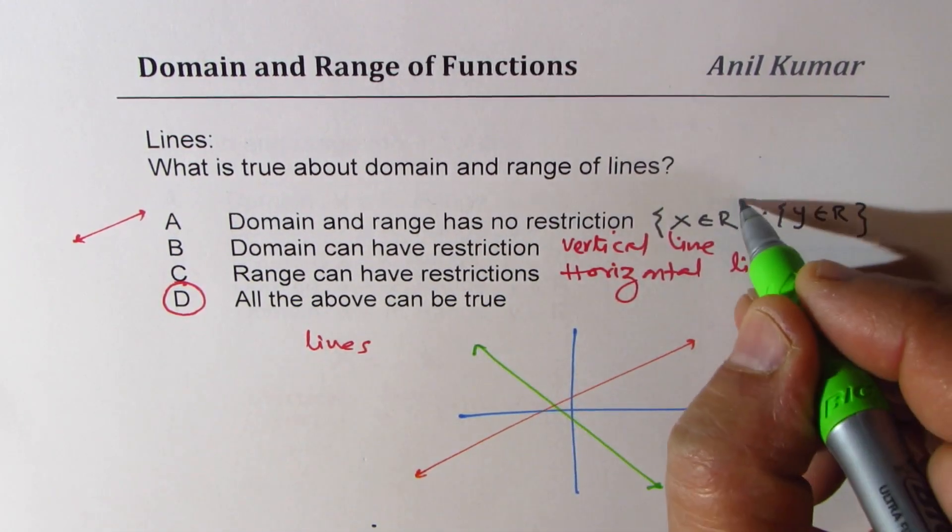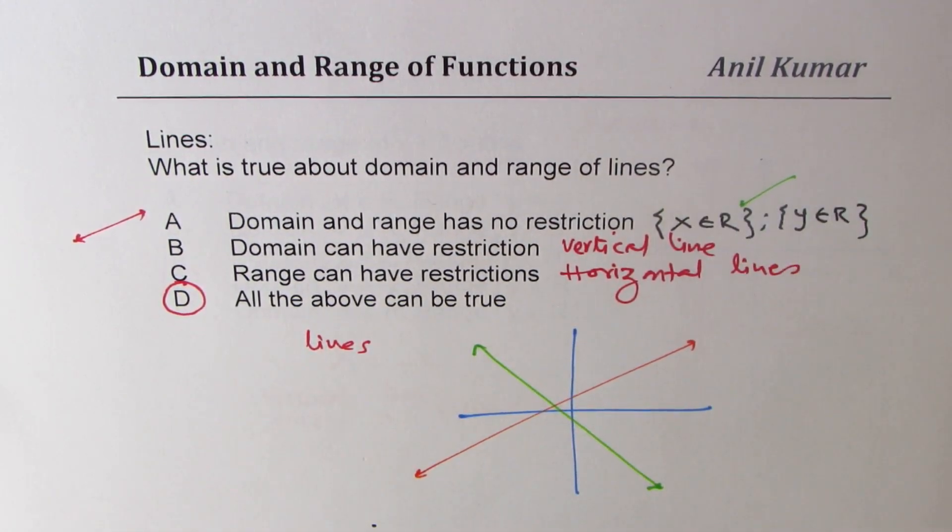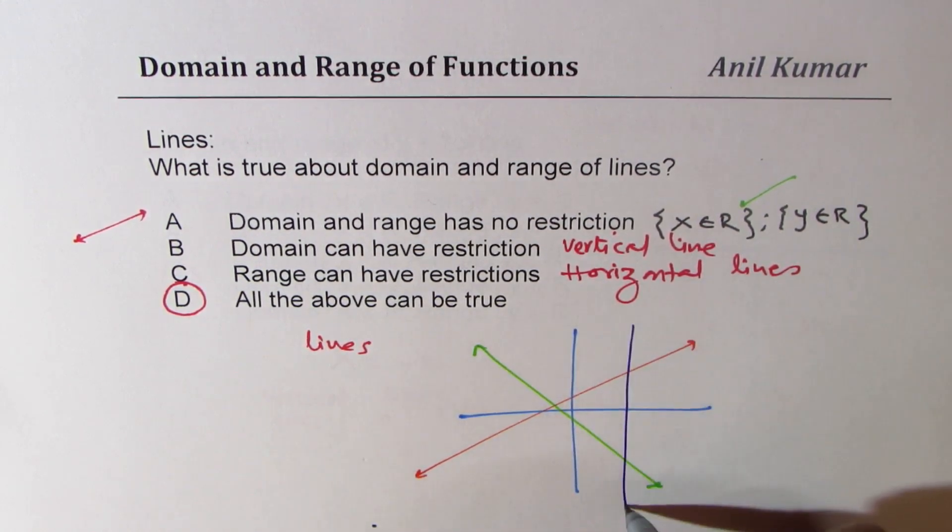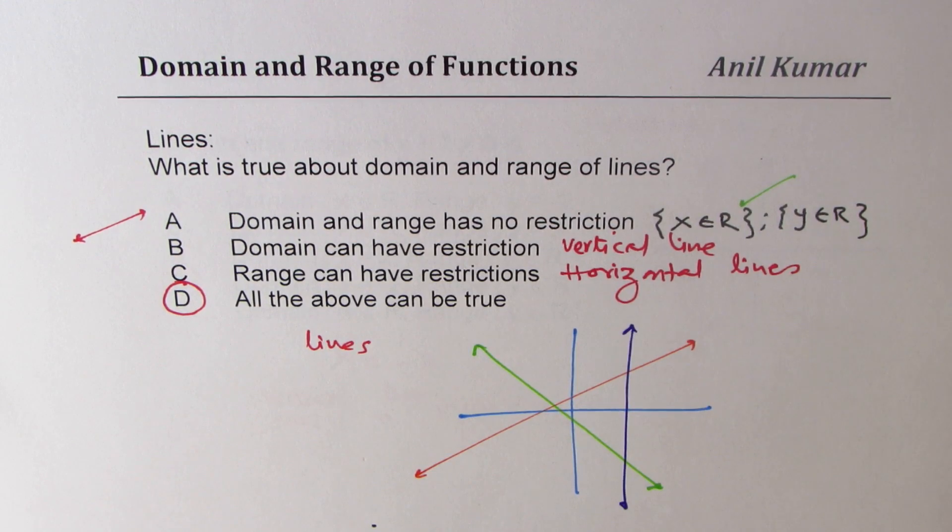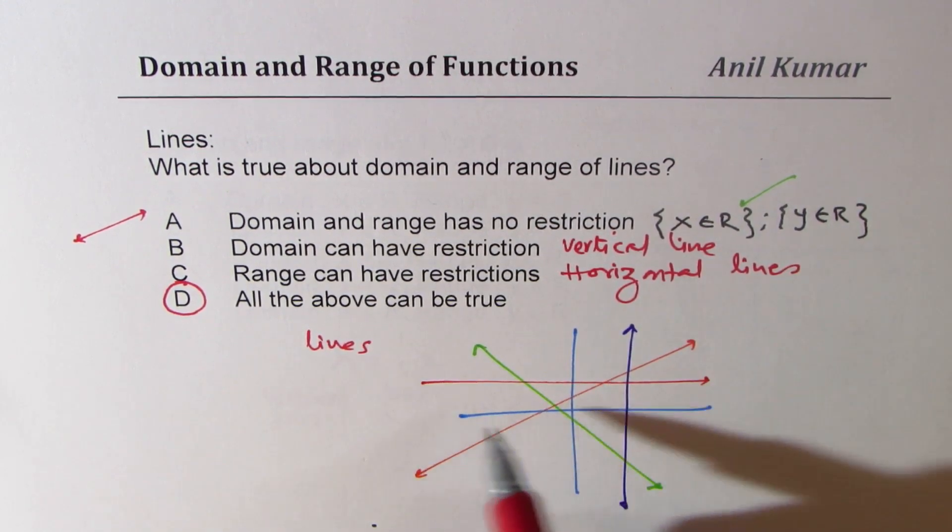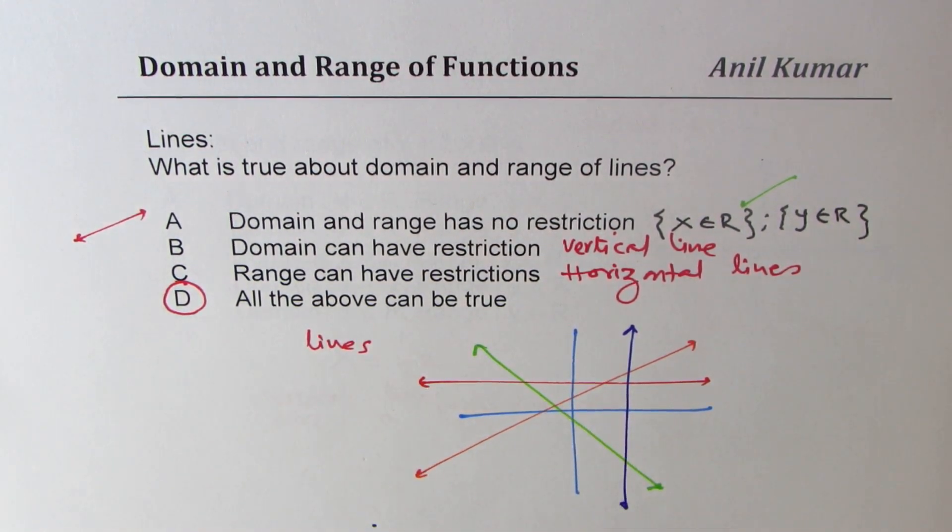But if it is a vertical line or horizontal line, then domain and range can be restricted as shown here. So I hope this concept is absolutely clear.